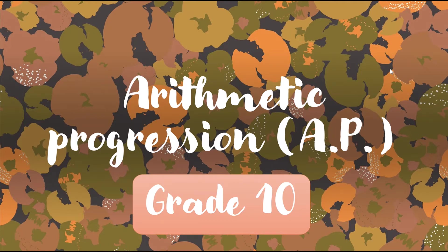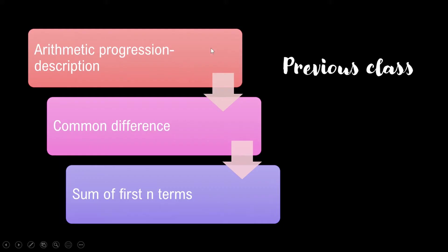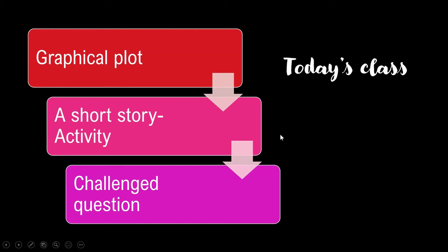Hello students. Today is our second session of arithmetic progression. In the previous session we learned about the description of arithmetic progression, what it is, what the common difference is, and what the sum of n terms is. We also solved some problems related to that. Today's objective is to see the graphical plot of arithmetic progression, do a short activity, a short story based on AP, and solve some challenge questions based on this chapter.